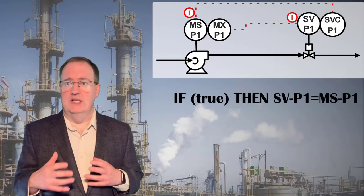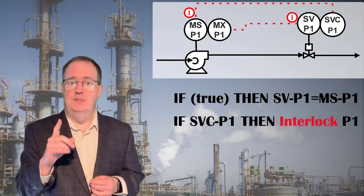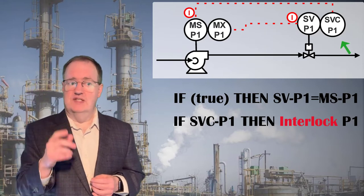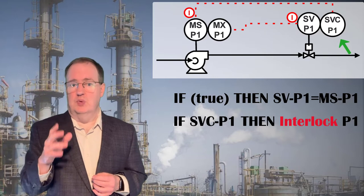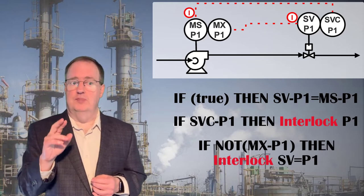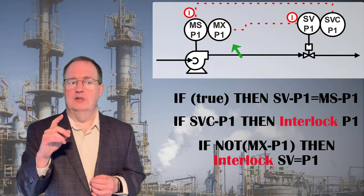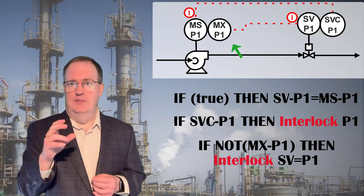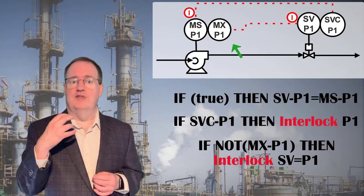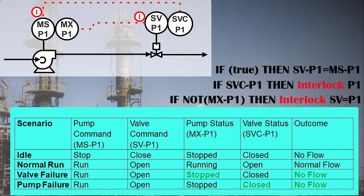Let's add constraints to deal with these cases. First, let's add an interlock that stops P1 if SVP1 is closed. SVC-P1 is the signal from a limit switch which tells us whether SVP1 is closed. Next, let's add another interlock to handle the failed pump case. MXP1 is the feedback signal on whether the pump is running or not, so NOT MXP1 will be true if the pump is not running. Pause here and think about what's wrong with this system.